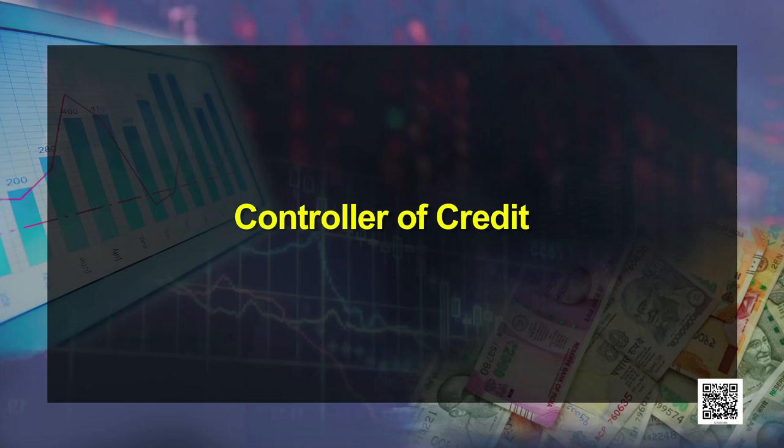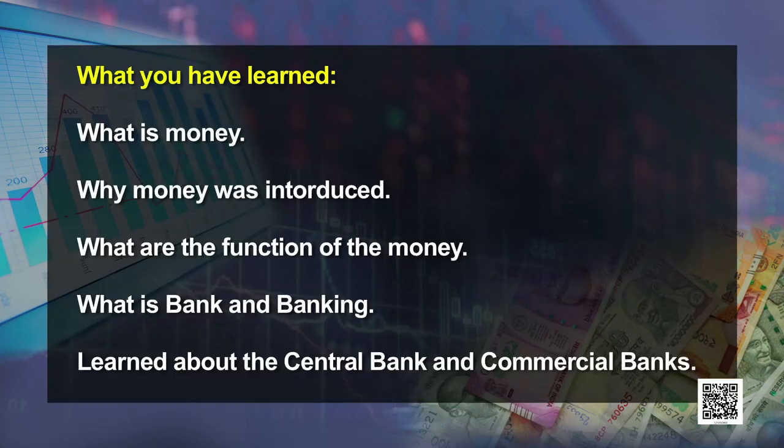The next function is controller of credit. It is very important to control credit in the economy because excess credit or deficient credit are always harmful. Excess credit leads to the problem of inflation, and deficit credit leads to the problem of deflation. So our central bank uses various quantitative and qualitative tools to control the amount of credit available in the economy. I hope you would have understood what is money, why was it introduced, what are the functions of money, what is a bank, what is banking, and what are the two most important types of bank in our country — central bank and commercial bank — and the functions of the central bank.